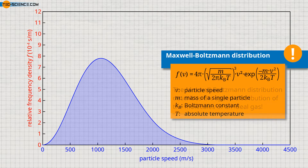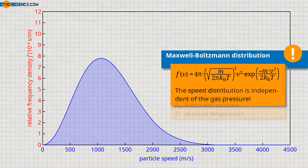In this formula, M denotes the mass of a single gas molecule. The constant K_B is the so-called Boltzmann constant. The temperature T must be given in this formula in the unit Kelvin. The given curve shows the speed distribution using the example of helium at a temperature of 273 Kelvin. Note that the speed distribution is independent of the gas pressure. In another video we deal with the experimental determination of the speed distribution in a gas in more detail. For ideal gases, this speed distribution can also be derived mathematically, which we will discuss in another video.